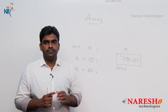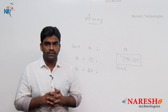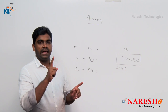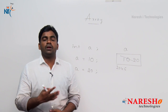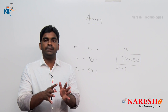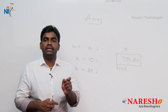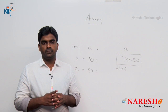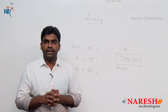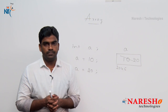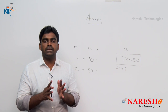Using an array, we can store n number of elements — more than one element — using a single array variable. We can store n number of elements, but of the same data type. Only homogeneous data elements are allowed in arrays. Either all elements are integer type, all float type, or all double type. Only homogeneous elements are allowed — that is called an array.